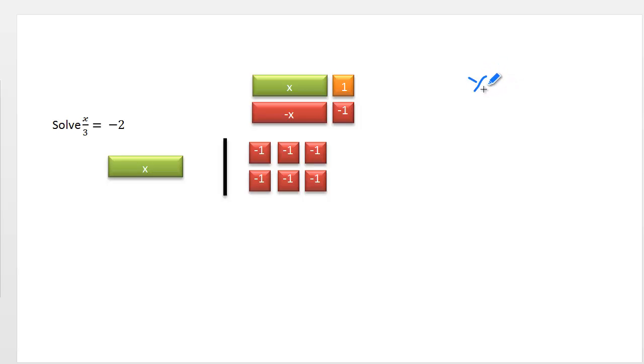Finally, solving x over 3 equals negative 2 algebraically says we want to get the x all by itself to have a single 1x here. And it's currently being divided by 3. The opposite of division is multiplication. So I'm going to multiply the left-hand side by 3. But if I multiply the left-hand side by 3, I have to be fair to the right-hand side and multiply it by 3 as well. 3 divided by 3 is 1x. And a negative 2 times a positive 3 is 6.